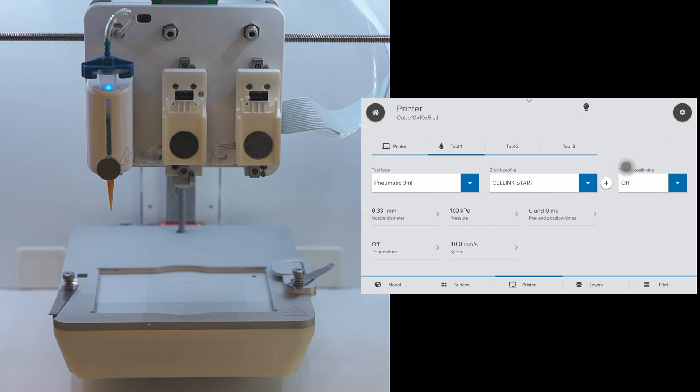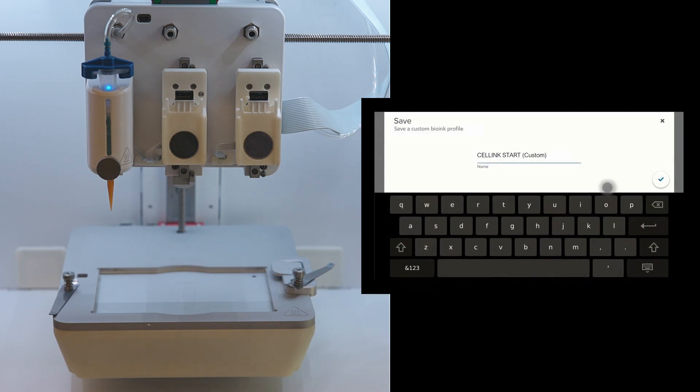Pre and post flow can be used for material that needs a moment to begin extruding or may still be attached to the nozzle after extruding. Next, click on the plus sign beside the bio-ink profile to save the profile. The current profile will remember the nozzle diameter, the extrusion pressure, the print speed, pre and post flow information regarding the bio-ink.